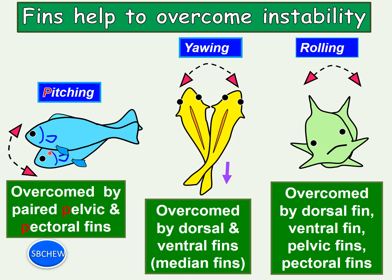For example, if the fish is pitching downwards and wants to return to a horizontal position, it moves its pectoral fins downwards. The opposite reaction of the water then pushes it upwards, correcting the pitch. This is how pitching is controlled by the pectoral fins.